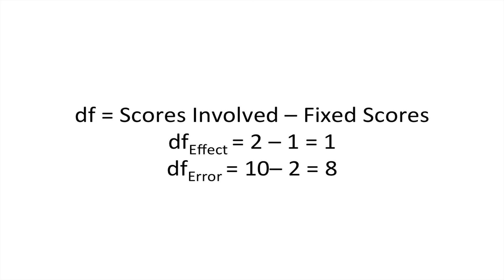You have one less freedom to choose than the original value. For our effect, we get one degree of freedom. And for our error, because error involves our entire sample and we had two groups, we get eight degrees of freedom because it's our total sample size minus the number of groups we had.